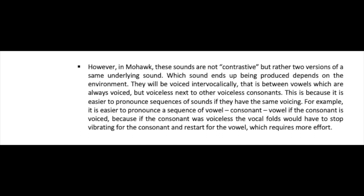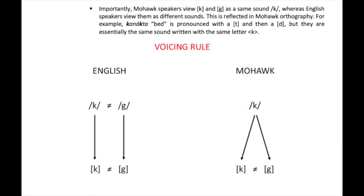For example, it is easier to pronounce a vowel-consonant-vowel sequence if the consonant is voiced, because if it were voiceless, the vocal folds would have to stop vibrating and restart, requiring more effort. Importantly, Mohawk speakers view K and G as the same sound, whereas English speakers view them as different. This is reflected in Mohawk orthography — for example, 'ganakta' is pronounced with a T and then a D, but they are essentially the same sound, written with the same letter K.